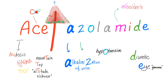Next, we have the C here for CHF. Why? Because in CHF, you're full of water — that's why you need a diuretic. You can also add C for pseudotumor cerebri, which is idiopathic intracranial hypertension.